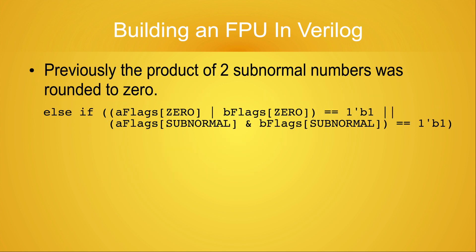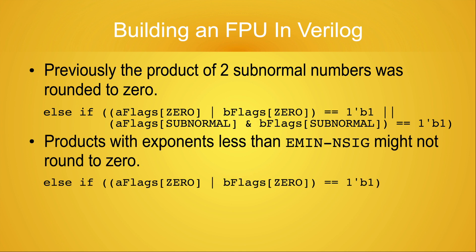The next change is how I deal with subnormal numbers. Because the previous version of the code simply truncated the product significand to at most NSIG plus 1 bits, and because the smallest representable exponent for subnormal numbers is E-min minus NSIG, I knew in advance that when two subnormal numbers were multiplied together the exponent of the product would be smaller than E-min minus NSIG — so there was never any reason to actually perform the multiplication. Because of the round toward positive and round toward negative rounding attributes, I can no longer simply zero out the product of two subnormal numbers. You can see the change in the conditional logic in this slide.